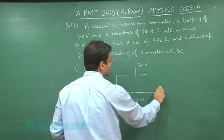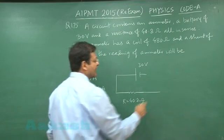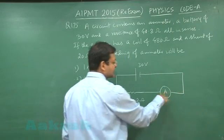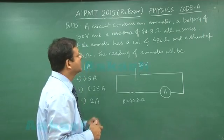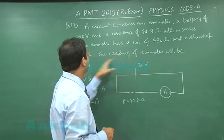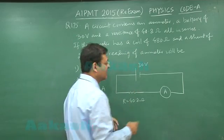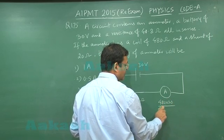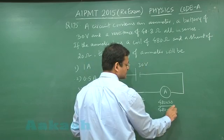And this ammeter has a description in the sense that it has essentially 2 resistors in parallel. The coil resistance is 480 and it has been shunted by 20 ohm, so that way effective resistance of this thing is 480 into 20 upon 480 plus 20 ohm. So that makes it basically 19.2 ohm, so this is the resistance of ammeter.